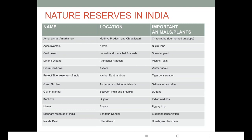The important animal in Dibru Saikhova is the water buffalo. There were news of floods in the state that affected this animal. Then regarding project tiger reserves of India, there are many tiger reserves. Some of the important ones are Kanha and Ranthambore. The important animal in tiger reserves is the tiger, and these are declared by the advice of the National Tiger Conservation Authority (NTCA).